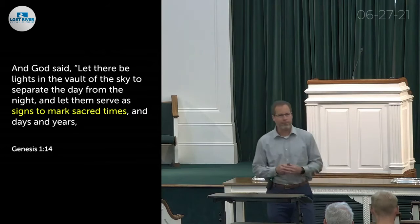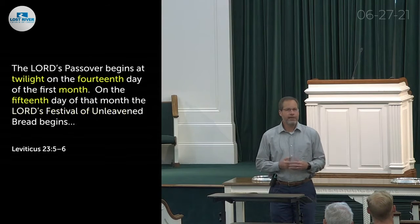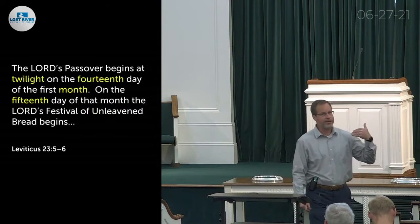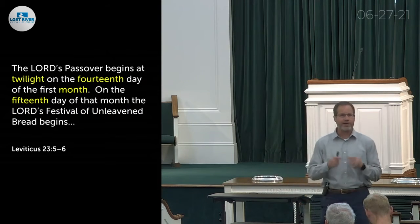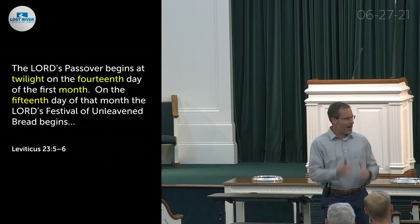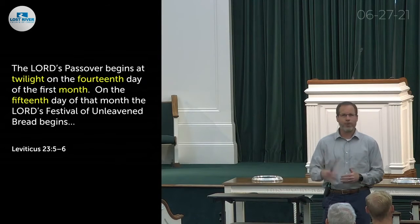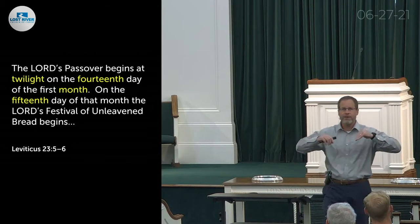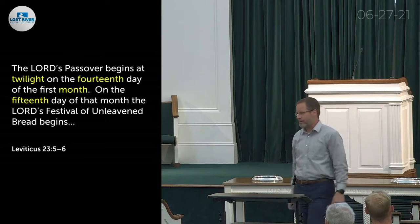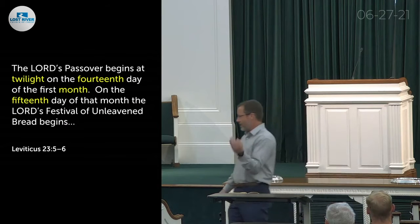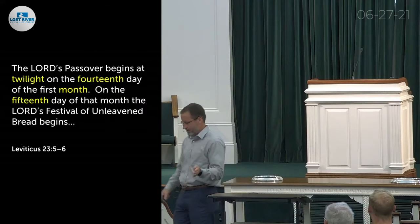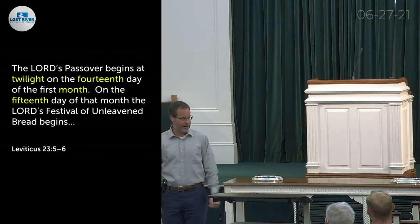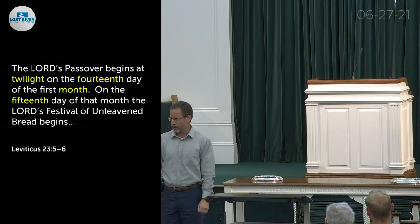An example from Leviticus 23:5-6: the law of Moses says the Lord's Passover begins at twilight on the 14th day of the first month, and on the 15th day the Lord's festival of unleavened bread begins. Why the twilight of the 14th and then the 15th? The Jews followed a lunar calendar — each month tracked with the phase of the moon, roughly a 27-day cycle.